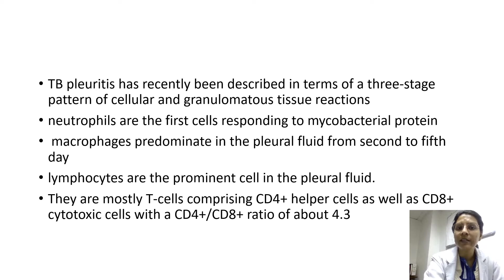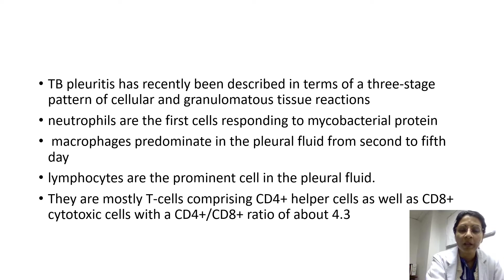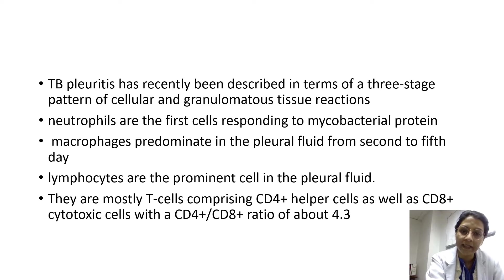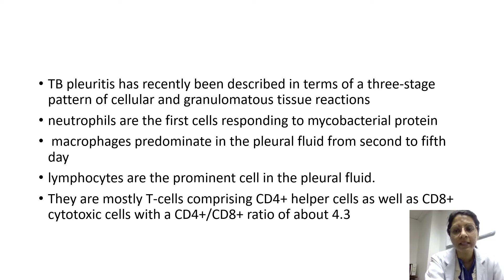TB pleuritis has recently been described in terms of a three-stage pattern of cellular and granulomatous tissue reactions. Neutrophils are the first cells to respond to the mycobacterial protein. Macrophages predominate in the pleural fluid from the second to fifth day. Lymphocytes form the prominent cell in later stages — mostly T-cells comprising CD4 helper T-cells and CD8 cells, with the CD4 ratio much higher than CD8.